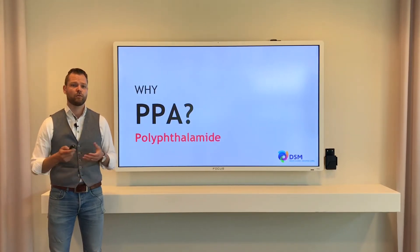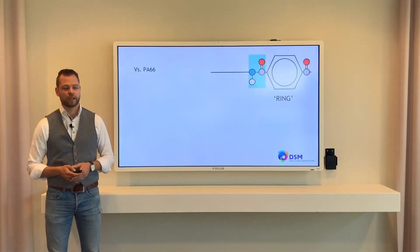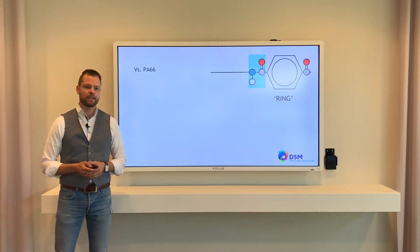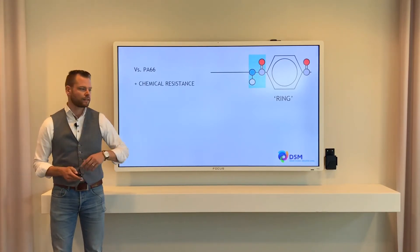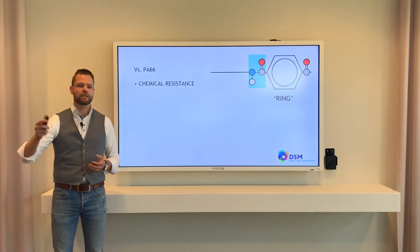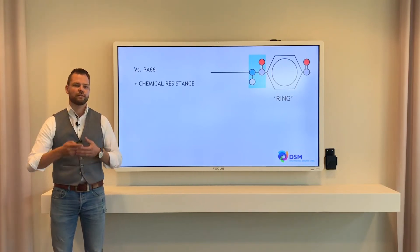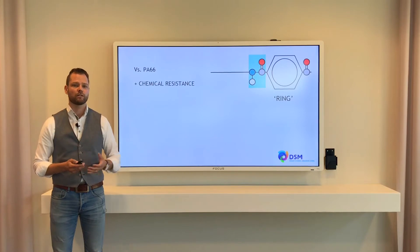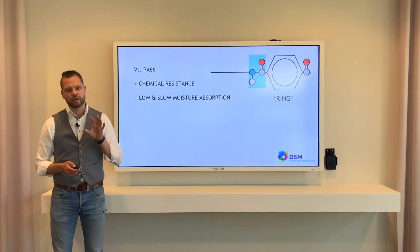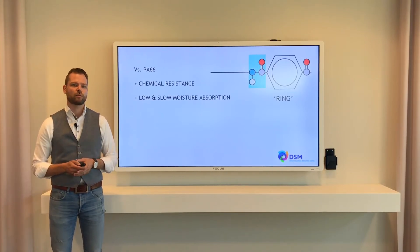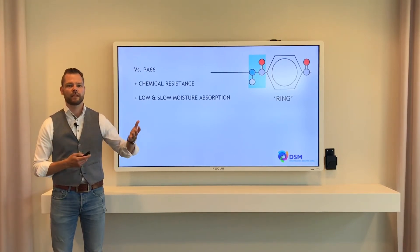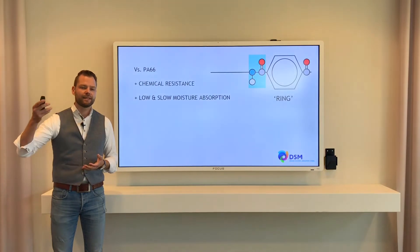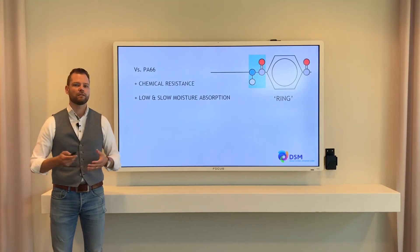But why PPAs? What can we do with them? Compared to polyamide 6-6, PPAs typically have a better chemical resistance — that can be engine oil, transmission oil, brake fluid, road salt, different types of acid, water glycol. PPAs have a much better chemical resistance. They also show very slow and very low moisture absorption. A polyamide 6-6 can absorb moisture and reach equilibrium in around two weeks, whereas for a PPA that takes even longer — around half a year.